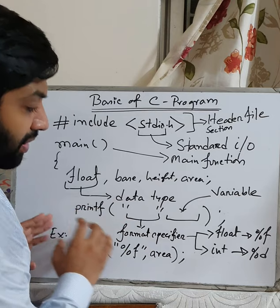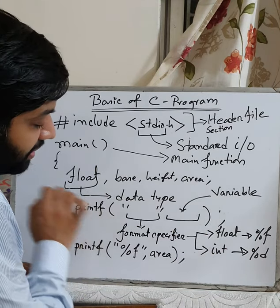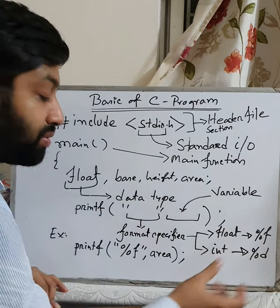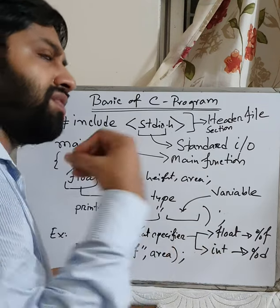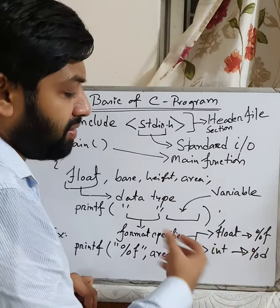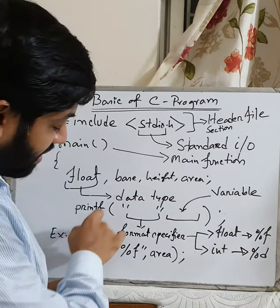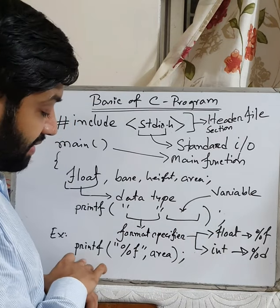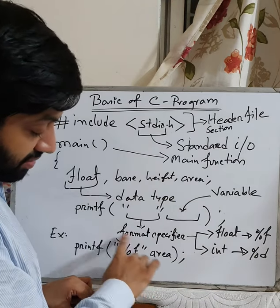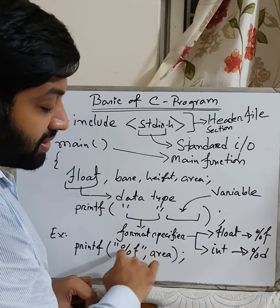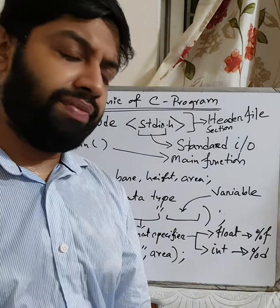I will show you how to use printf and scanf functions. These two functions are very important: printf is for showing output, and scanf is for taking input from the user. In the printf function there are two parts — first is the format specifier, and second is the variable. You must memorize the format specifiers: for float use '%f', and for integer use '%d'.